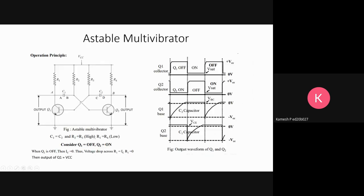Astable multivibrator - the operation principle is that VCC is applied. Let's consider C1 equals C2, R1 equals R4, R2 equals R3. Initially, Q1 is off and Q2 is on.